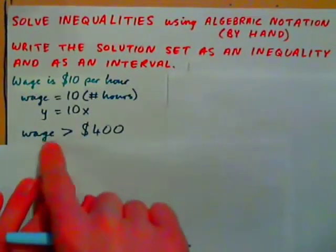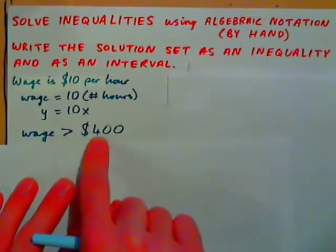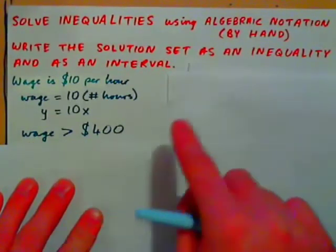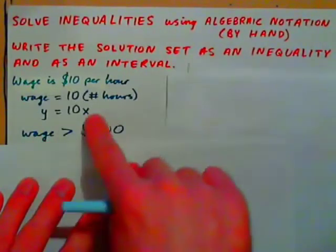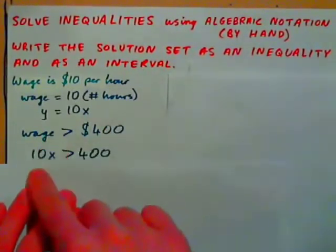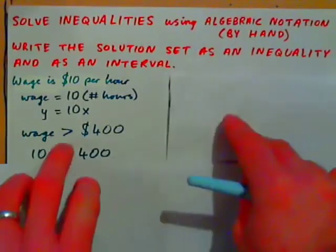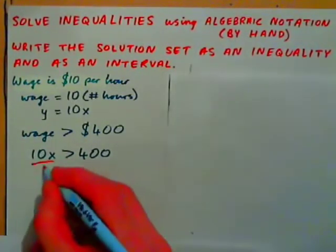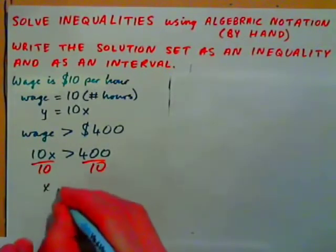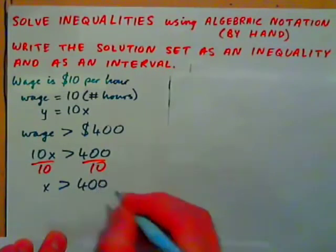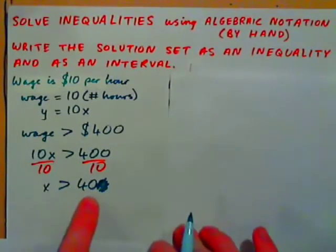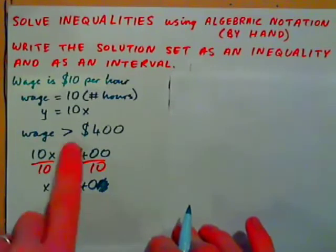What if we wanted our wage to be more than $400? If you want your wage to be more than $400, you replace wage with the expression 10x and solve the inequality. Dividing both sides by 10, we get x is greater than 40. So if you work more than 40 hours, your wage is above $400.